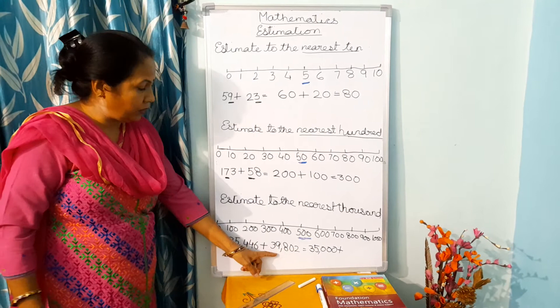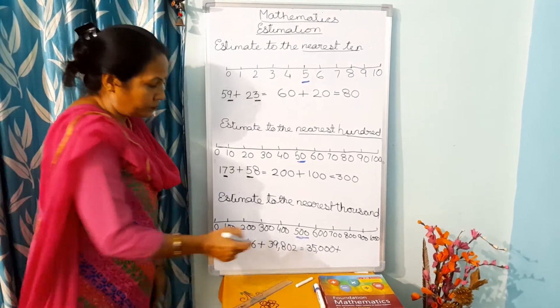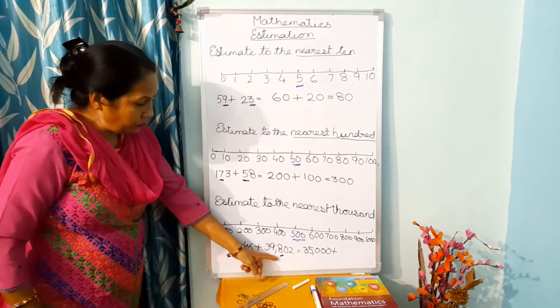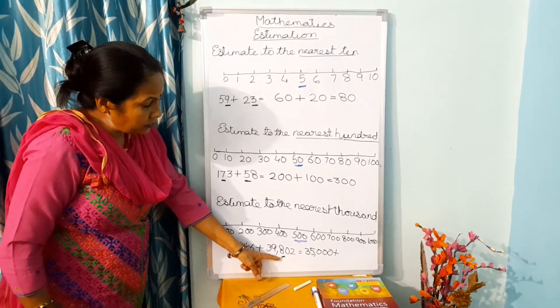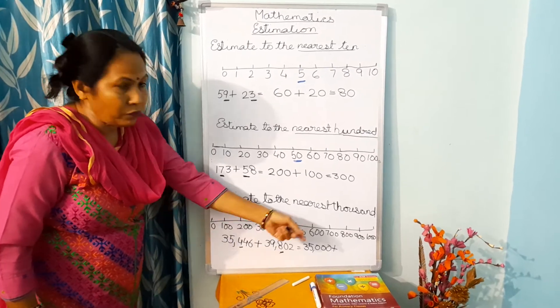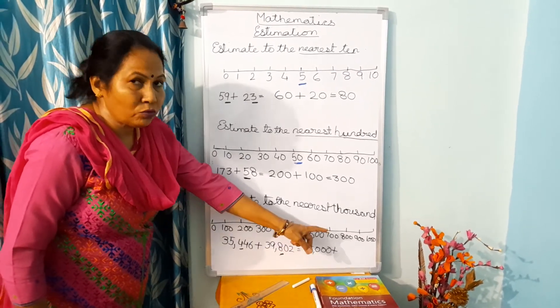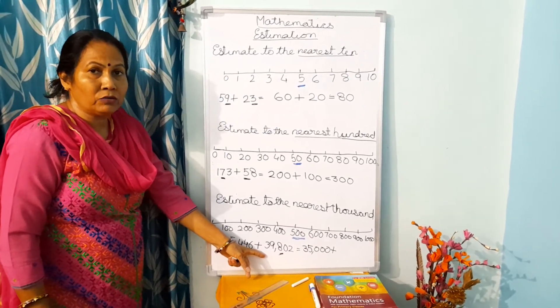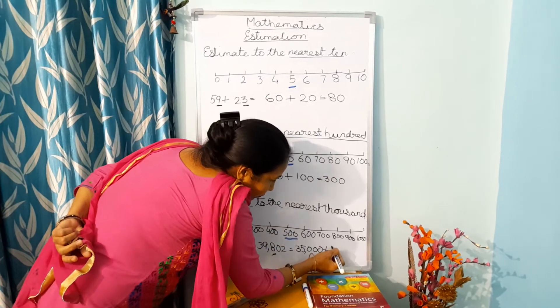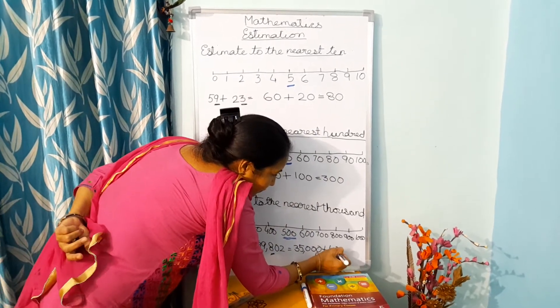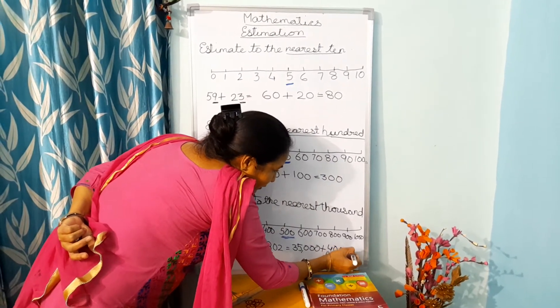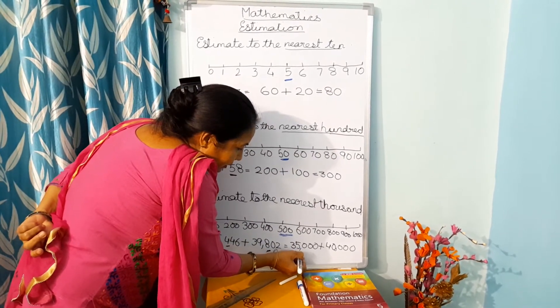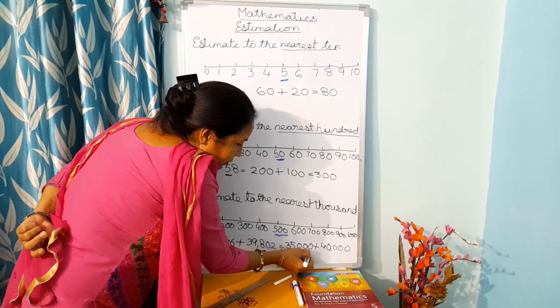Now here you have 39,802. You will take the 100's place. Now this is more than 500, so this will change into 1000 and you will add 1000 to 39,000 and this will become 40,000. Now you will add this and your answer is 75,000.